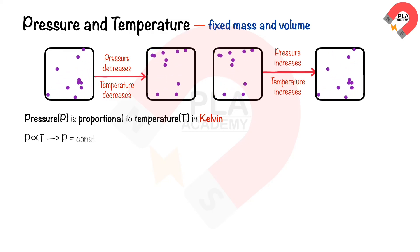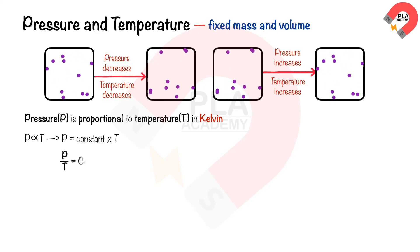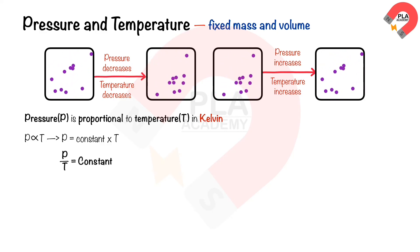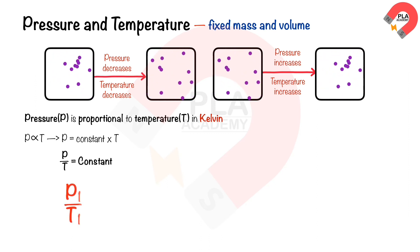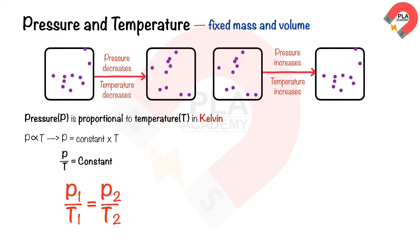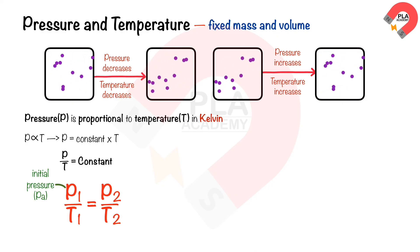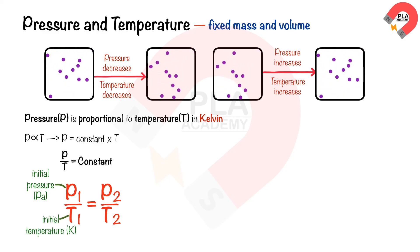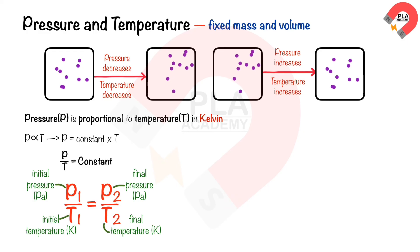So we can deduce mathematically that P equals constant times T, and P over T equals constant. We can also write the equation as P1 over T1 equals P2 over T2, where P1 is the initial pressure in Pascals, T1 is the initial temperature in Kelvin, P2 is the final pressure in Pascals, and T2 is the final temperature in Kelvin.